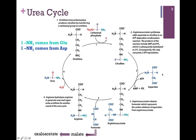In step three, we hydrolyze a portion of the argininosuccinate molecule to release fumarate. Recall from chapter 14 that fumarate can feed into the citric acid cycle to be converted to malate and then to oxaloacetate. Continuing in the urea cycle, with the release of fumarate we form the amino acid arginine. In our last step, we hydrolyze the end group from arginine to release our final product, urea, and regenerate our starting molecule, ornithine.